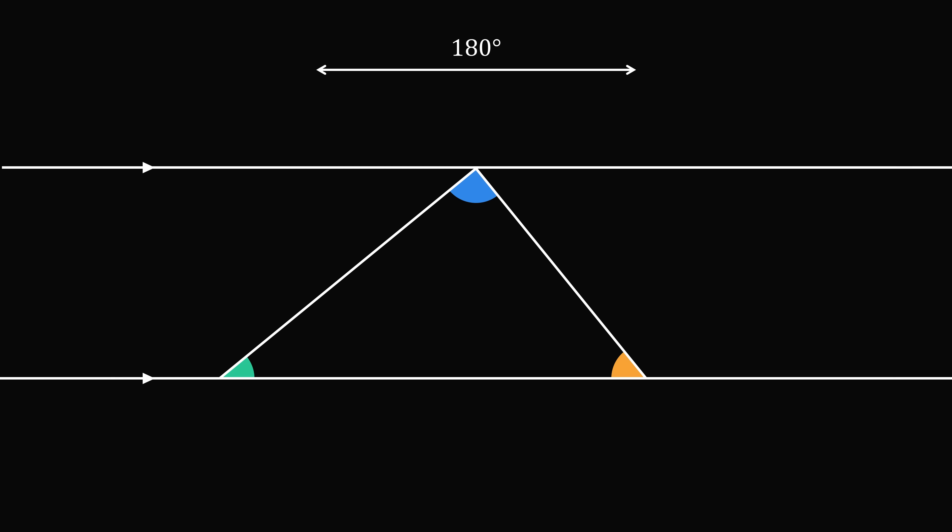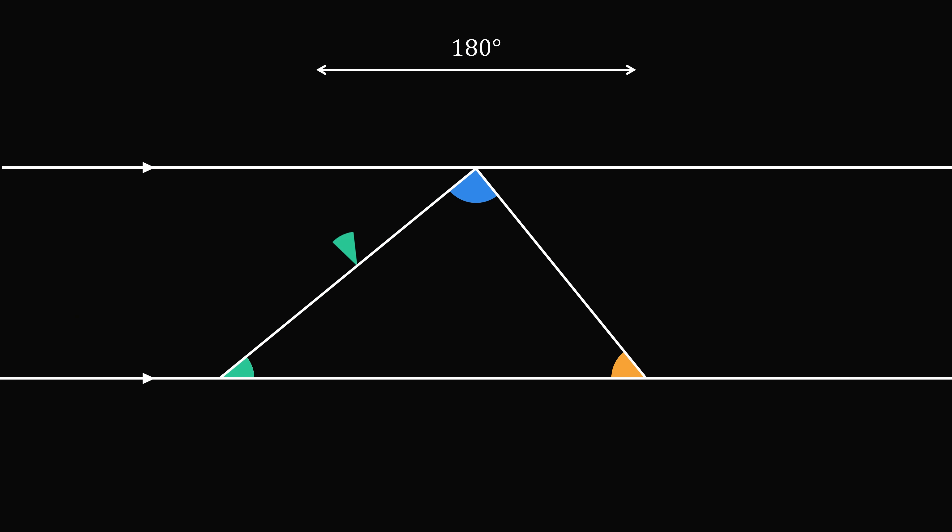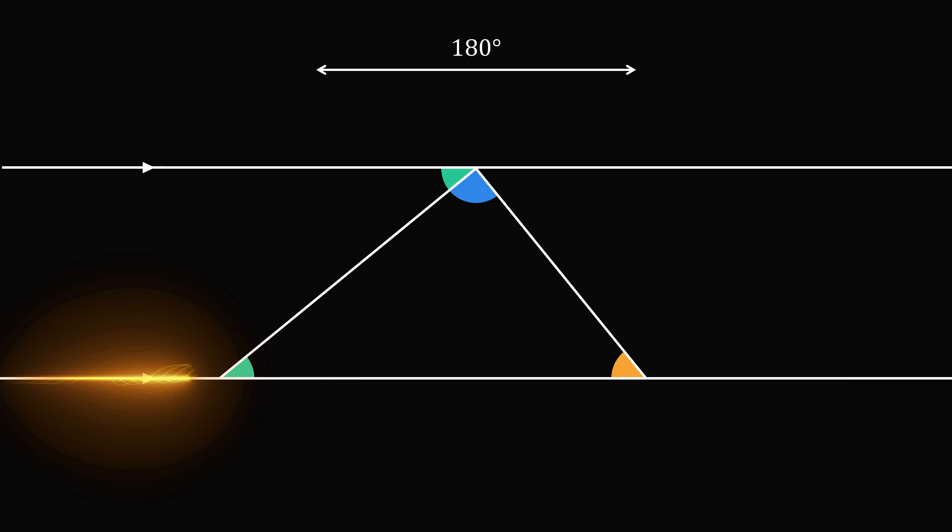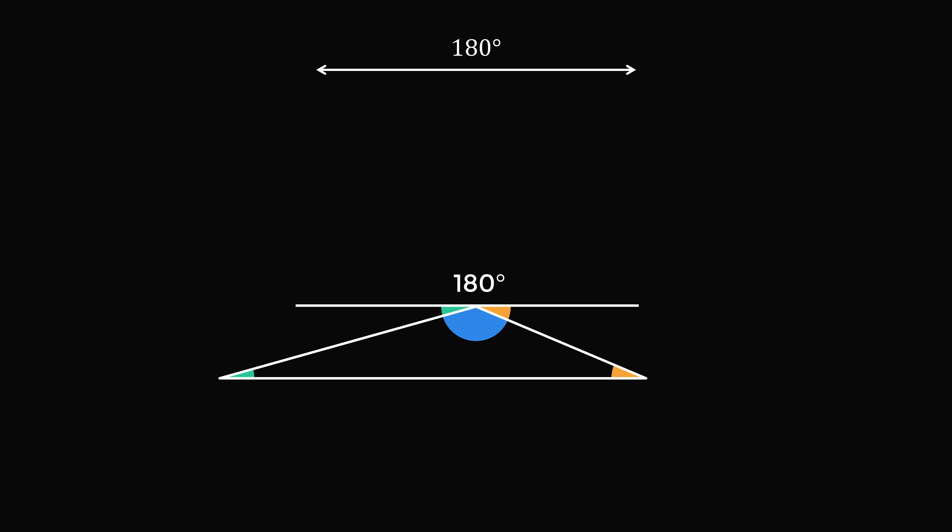We now have alternate interior angles on both sides of the top angle. So the left angle of this triangle on the bottom is equal to this angle on the top. The same thing is true, the bottom right angle is equal to this angle on the top. We can now see that the three angles of the triangles have exactly a sum that's equal to that of a straight line. Therefore, the three angles sum up to 180 degrees. Notice this is true no matter how we draw this triangle. We will always have the sum of the three interior angles is equal to 180 degrees.